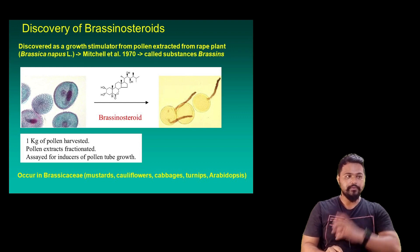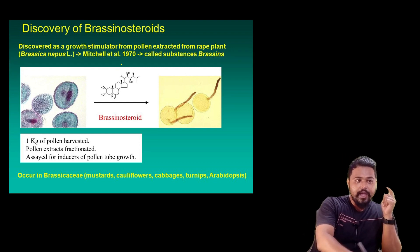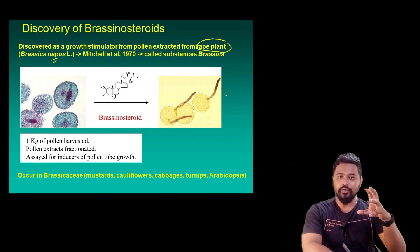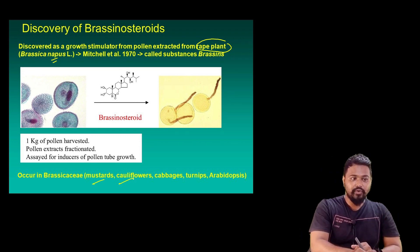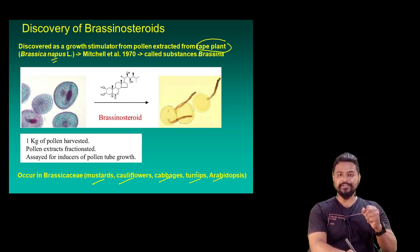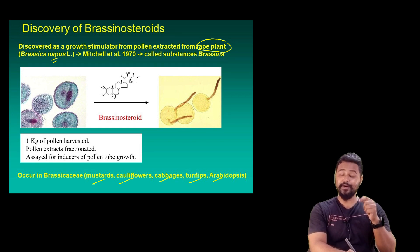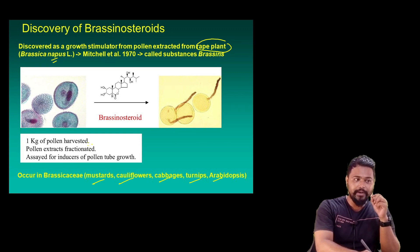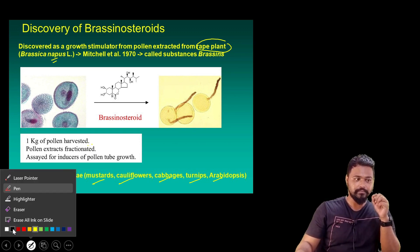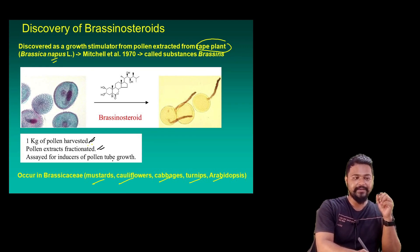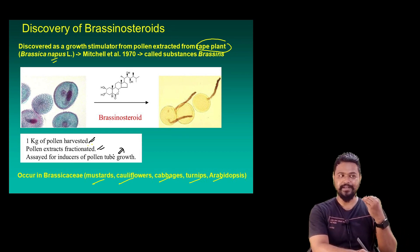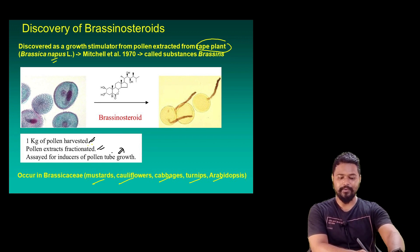Brassinosteroids were discovered as a growth stimulator from pollen extracted from a rape plant — Brassicus — which includes mustards, cauliflower, cabbages, turnips, and Arabidopsis. The pollen extract was fractionated and found to induce pollen tube growth. This hormone is mainly responsible for that, so it is called brassinosteroids.